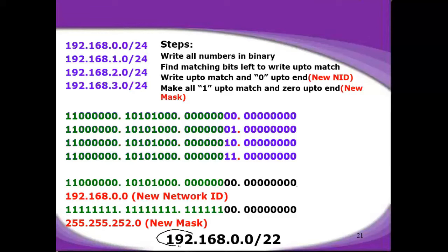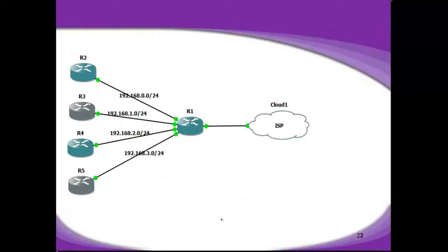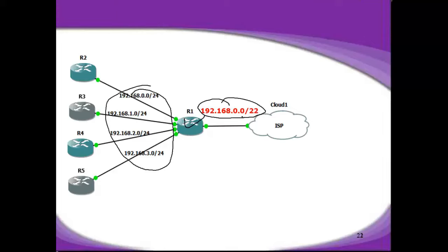This is the network entry — the summarized or supernet entry — with a slash value of 22. This new mask means the entry you are going to advertise is 192.168.0.0/22. Instead of advertising all 4 networks, the router just advertises one entry that contains all 4 entries behind it.